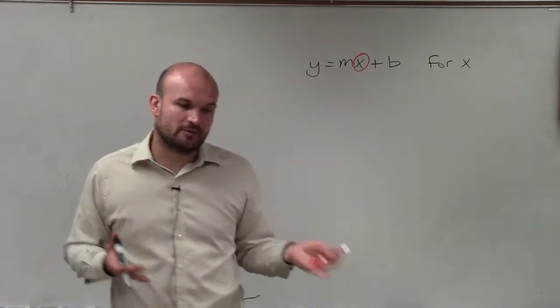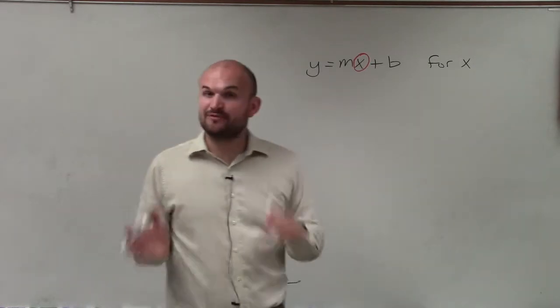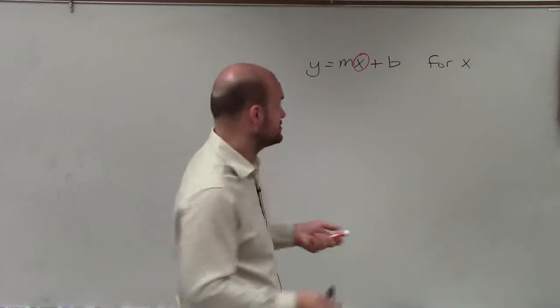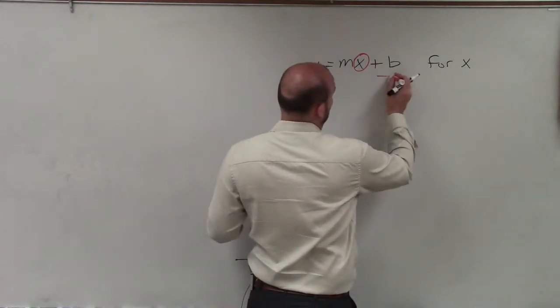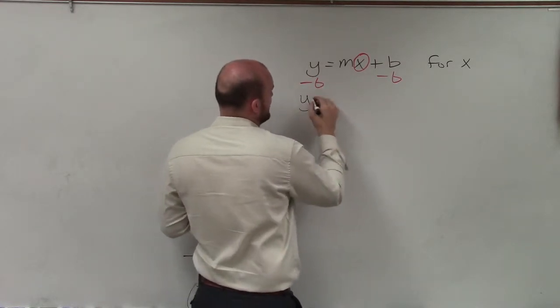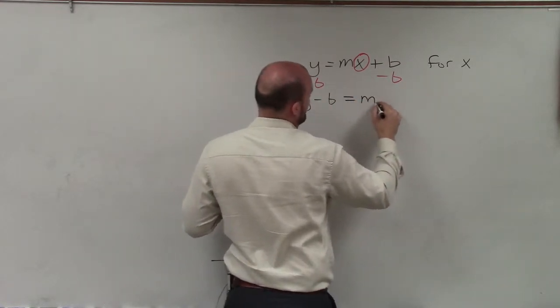And whenever we're solving for a variable, we want to use our inverse operations and the reverse order of operations, meaning we want to undo addition and subtraction first. So I'm going to undo addition of b by subtracting b on both sides. Therefore, I have y minus b equals mx.